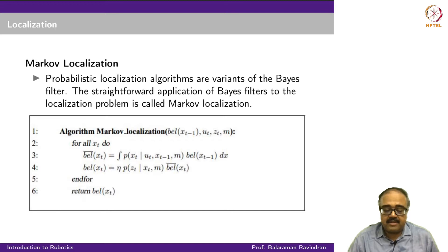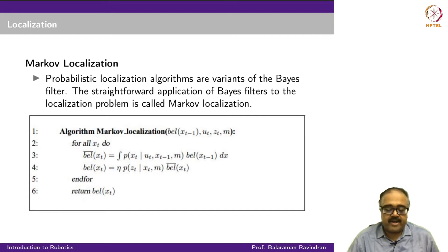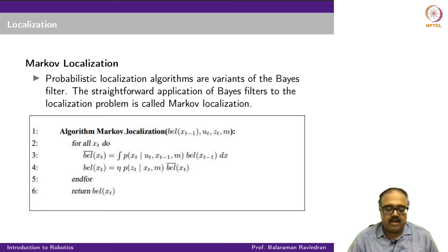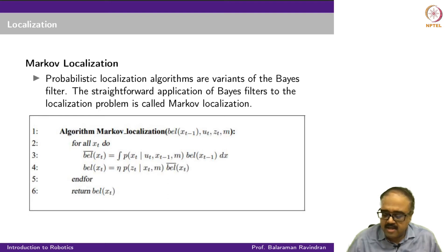The Markov localization algorithm takes as input your previous belief state, your current action, your current measurement, and the map — potentially the current map if you have a time-varying map. For all x, we obtain bell-bar, which takes into account the motion model — this is the prediction update. Then we obtain bell by accommodating the measurement — this is the correction or measurement update — giving me the position of x taking into account the knowledge of the map m. After the update for all states, we return the new belief state.